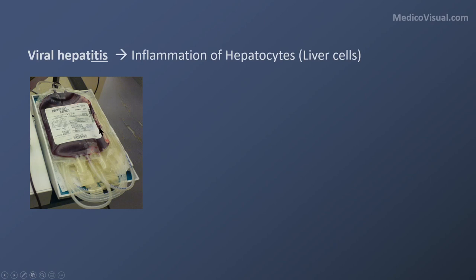In 1963, in patients who received frequent blood transfusions — for example, thalassemia, hemophilia, or leukemia patients, especially of Australian origin — they found a unique antigen. Scientists named it the Australia antigen because it was initially found in people of Australian origin.